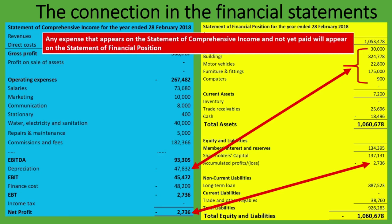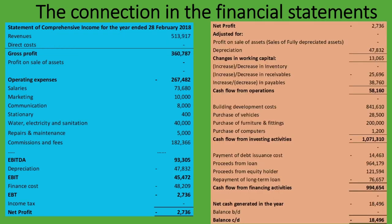An important note: any expense that appears on the statement of comprehensive income and has not yet been paid will also appear on the statement of financial position — in the liabilities section. Similarly, any income earned but not yet received will also appear on the statement of financial position — in the assets section. This is a direct result of the accrual basis of accounting.